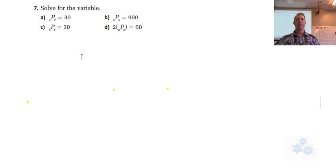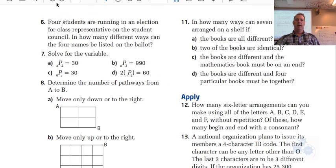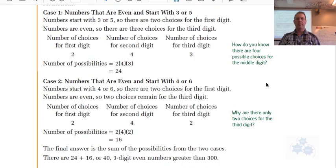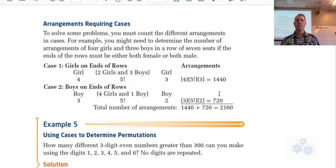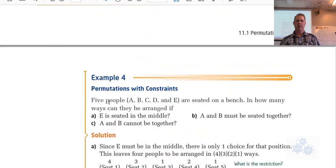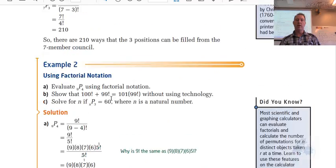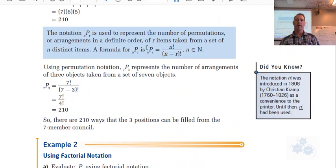All right, so this question right here, we are solving for N, and we have to use the permutation formula. So you guys learned in 11.1 the permutation formula, and we can go back to the textbook here real quick on that. Where is it? Oh, not there either. So the formula looks like this right here. Okay, here it is.